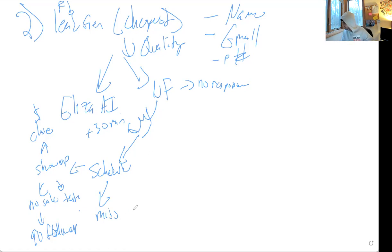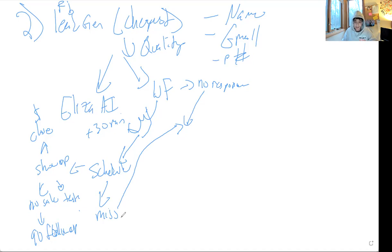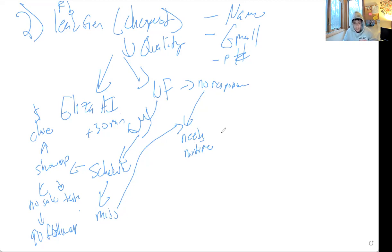If they missed the appointment or there's no response, it sends them to a workflow saying 'Hey you missed the appointment, why don't you reschedule?' — wait two days and add them to needs nurture. If they don't respond, you move them over to needs nurture, or if you're doing the manual workflow, after about five to ten days it'll automatically move over to needs nurture.